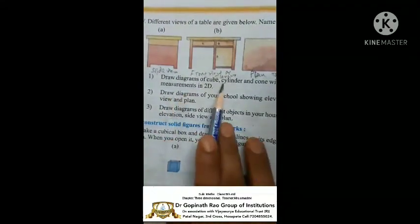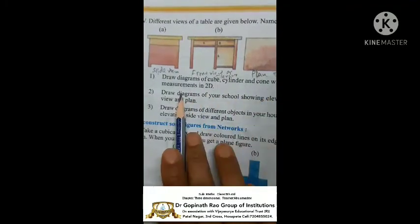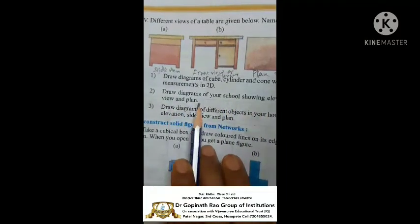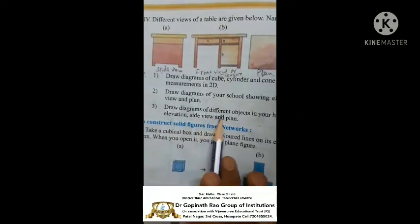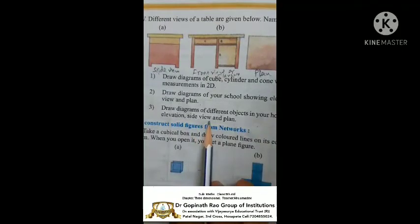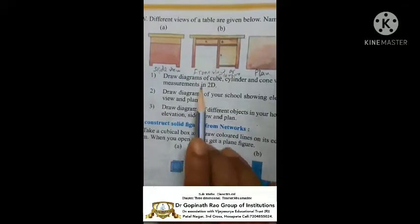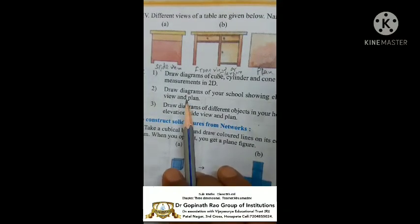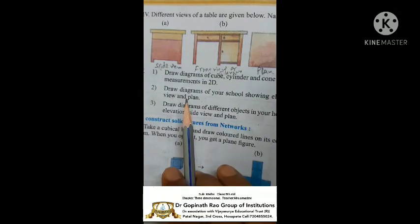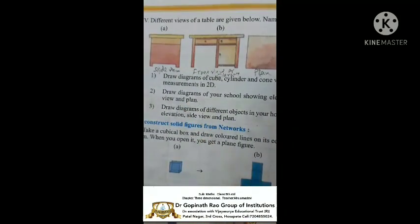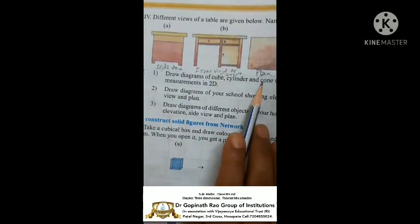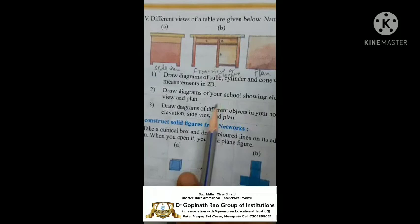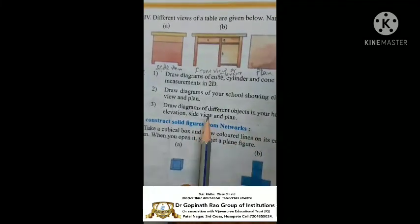Fifth: draw a diagram of a cube, cylinder, and cone with different measurements in 2D. Second: draw diagrams of your school showing elevation, side view, and plane. Third: draw diagrams of different objects of your house to show elevation, side view, and plane. You draw it — take any measurements, draw 2D shapes and 3D shapes. For your school, draw it just like a building structure.